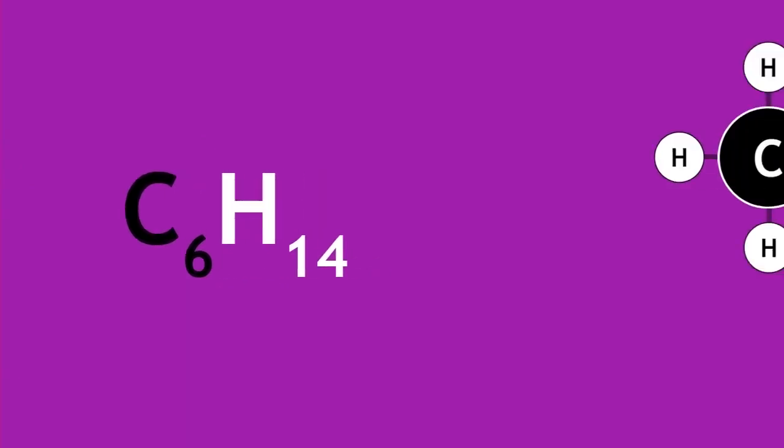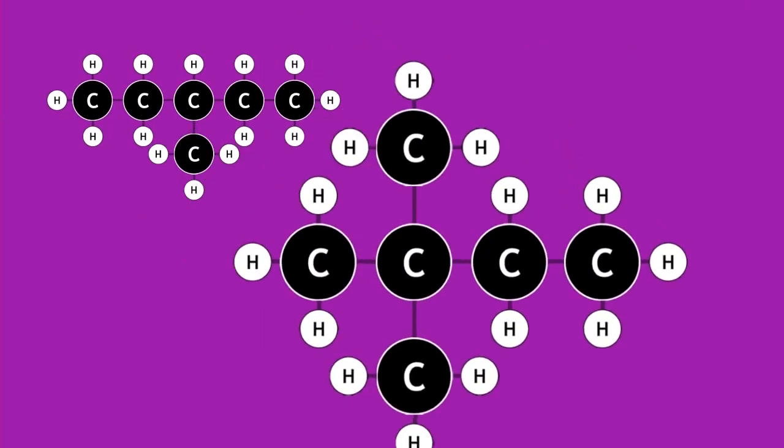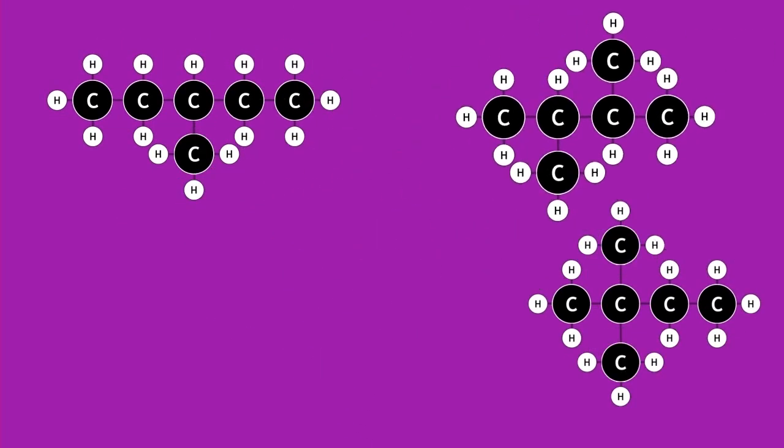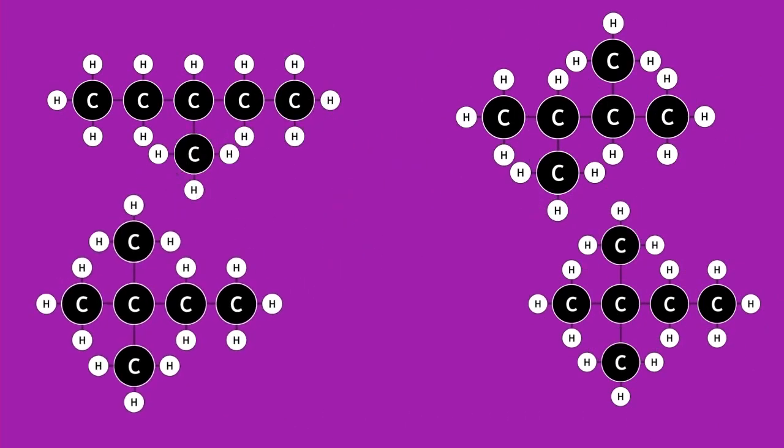This alone is not very useful, as it does not show us how the atoms are arranged and where the bonds are. If you look at these molecules, they all have 6 carbon atoms and 14 hydrogen atoms. Although you may not be able to name these different molecules, you can see they are very different, but all have the same molecular formula.